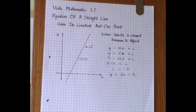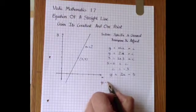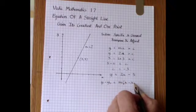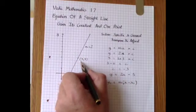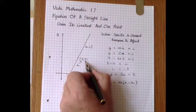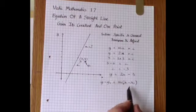The second conventional method uses the formula y minus y1 equals m times x minus x1. Here the coordinates x1 is 3 and the y1 is 3. And we just substitute in the three numbers to the formula.